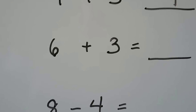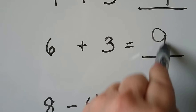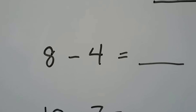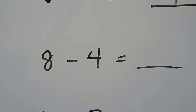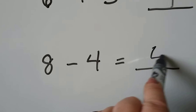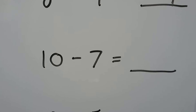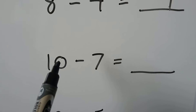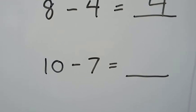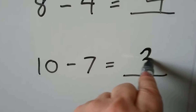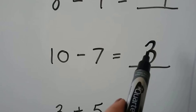6 plus 3 — we can count on 3: 6, 7, 8, 9. For 8 minus 4, we can think of a related fact: 4 plus 4 is equal to 8, so 8 minus 4 is equal to 4. For 10 minus 7, we can start at 7 and count on to 10: 7, 8, 9, 10 — that's 3. We started with the 7 and counted up to 10, and it was 3.